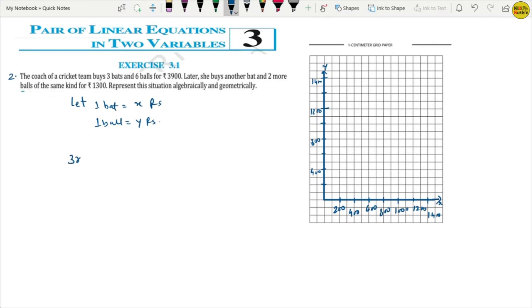What is the cost for 3 bats? 3 into x plus 6 balls, 6 into y equals Rs. How much? Rs. 3,900. This is our first equation.